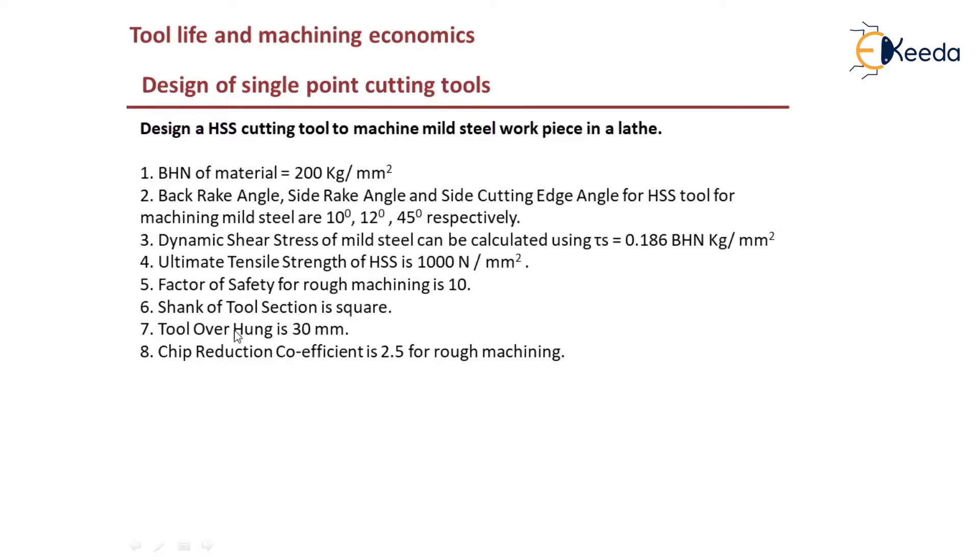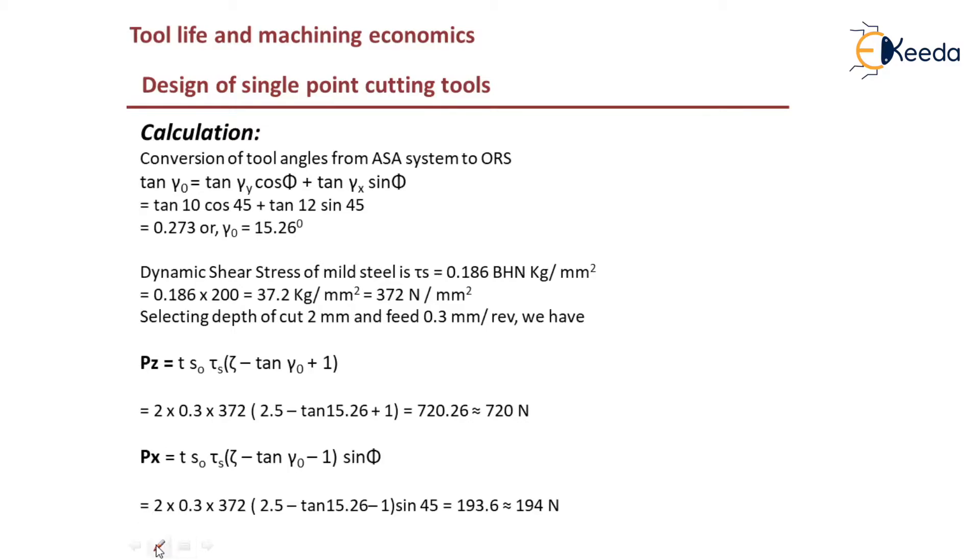Shank of the tool section is square, that is a square cross section. Tool overhang is around 30 mm. The chip reduction coefficient is 2.5 for rough machining.